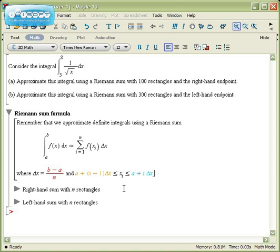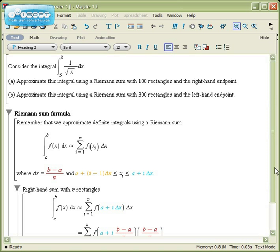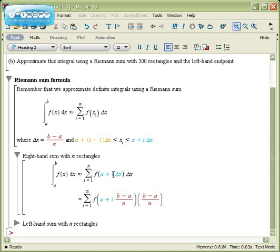If you wanted to work out a Riemann sum with right-hand endpoints and n rectangles, I would plug in the formula for the right endpoint for xi and plug in b minus a over n for delta x. I would get f of a plus i delta x times delta x, or f of a plus i times b minus a over n times b minus a over n, summed from 1 to n.